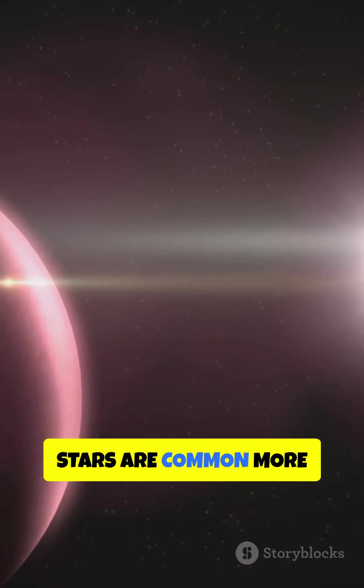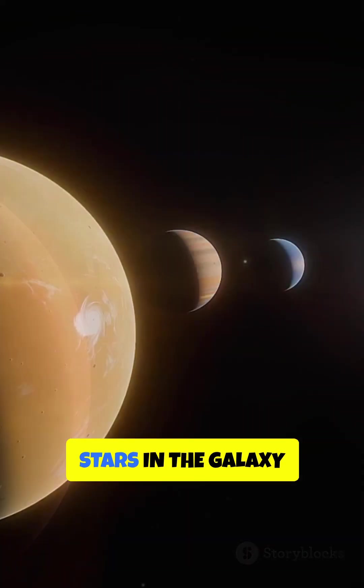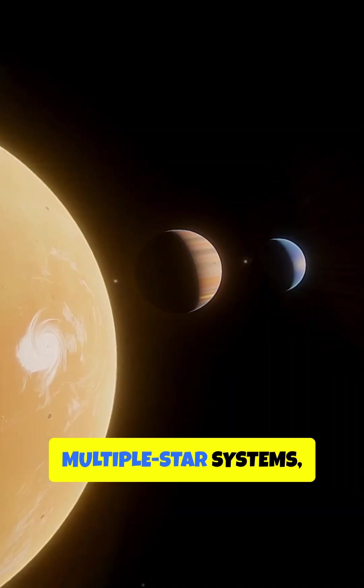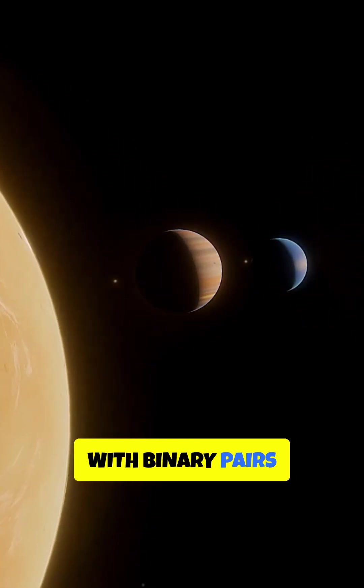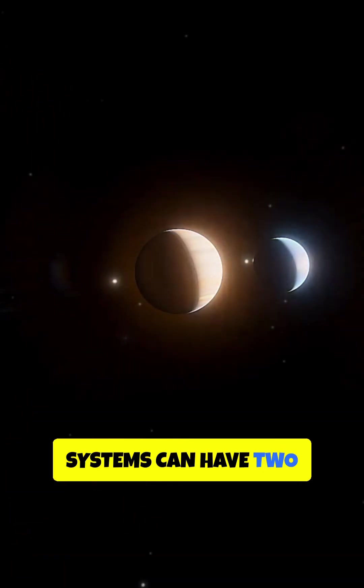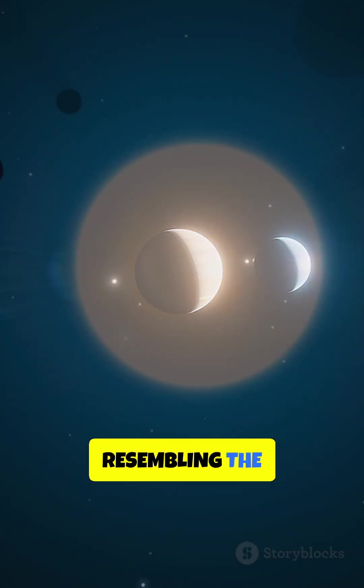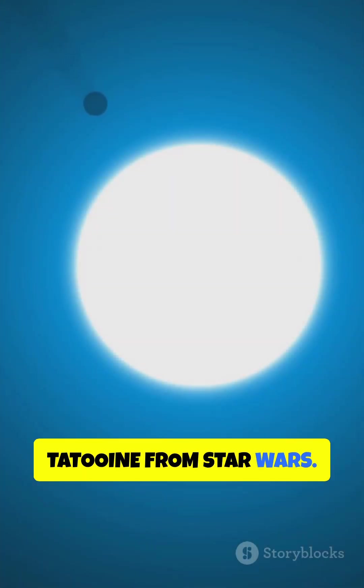Fun fact. Binary stars are common. More than half of all stars in the galaxy exist within multiple star systems, with binary pairs being the most common. Planets in these systems can have two suns in their skies, resembling the fictional planet Tatooine from Star Wars.